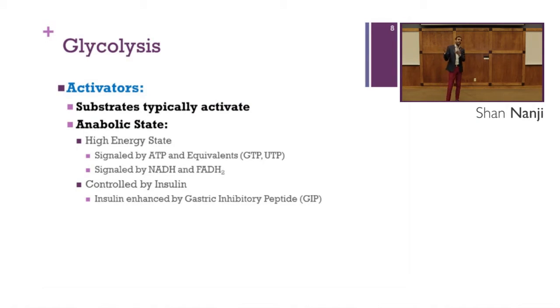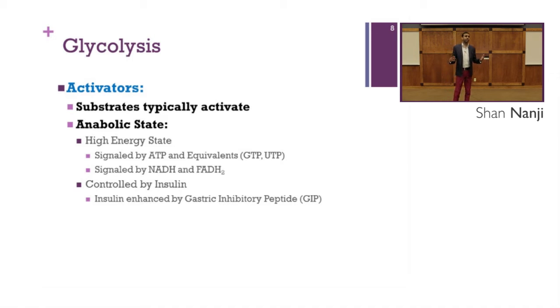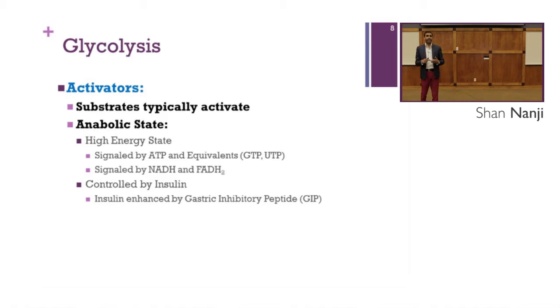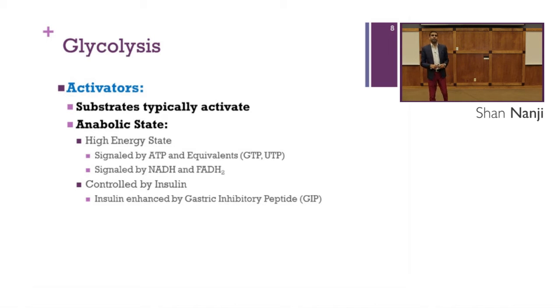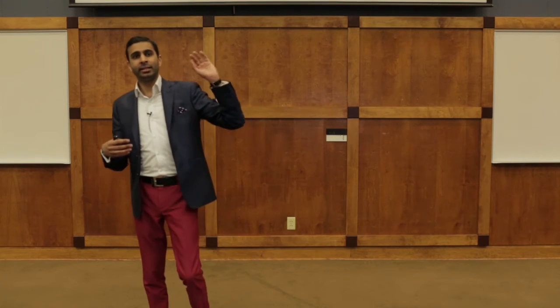Now let's talk about anabolic state activators. The rule still holds that substrates typically activate. A high energy state is signaled by ATP and equivalents like GTP and UTP, as well as NADH and FADH2. The anabolic state is also controlled by insulin, which is enhanced by gastric inhibitory peptide (GIP). Insulin pushes glucose into cells — our body's first and most abundant source of energy — placing us in the anabolic state where we store glucose for later use.